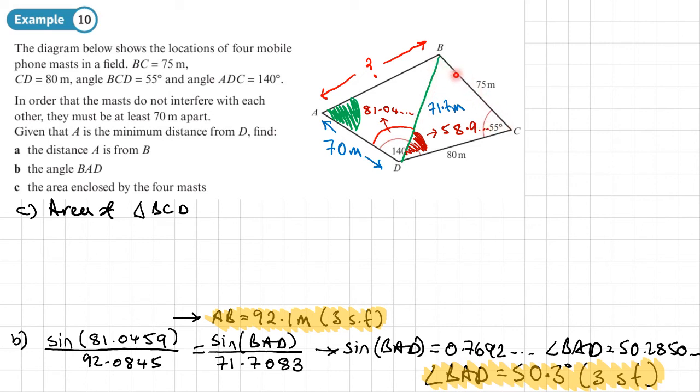So we'll start by working out the area of triangle BCD by using half AB sine C. So we'll use these as A and B and this is sine C. So that'd be half times 75 times 80 times sine 55. And that is 2457.4561, so that's going to be meters squared.